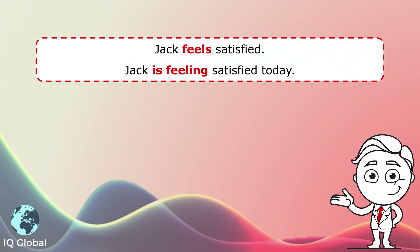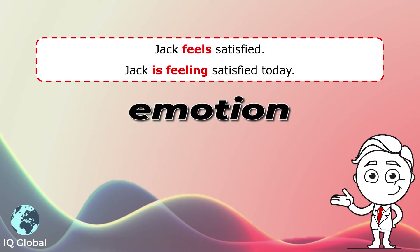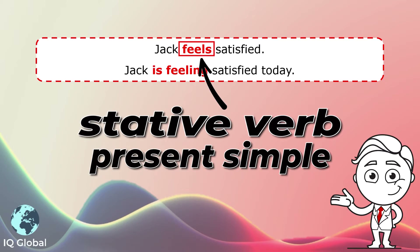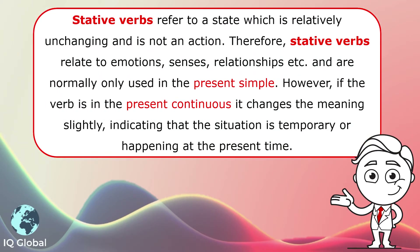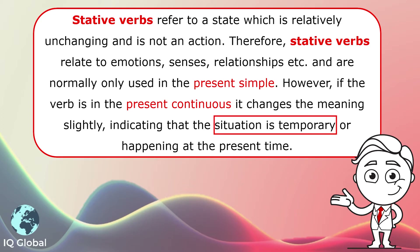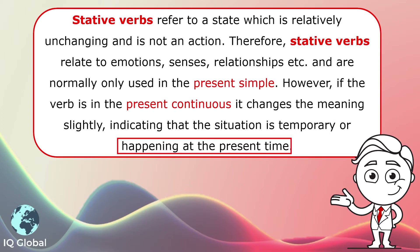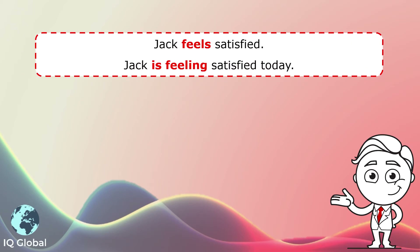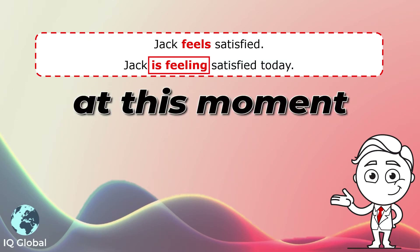The first example: Jack feels satisfied. This is telling us Jack's emotion — that he is satisfied. The stative verb is in the present simple. However, if the verb is in the present continuous, it changes the meaning slightly, indicating the situation is temporary or happening at the present time. The second example says: Jack is feeling satisfied today. This is how he is feeling at this moment in time.